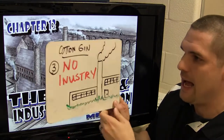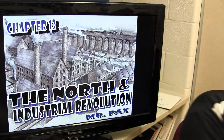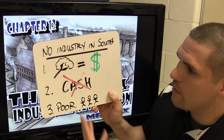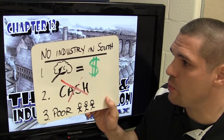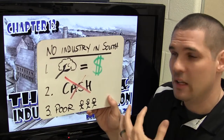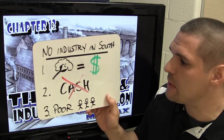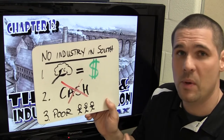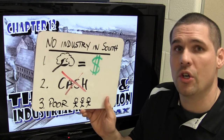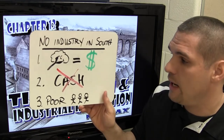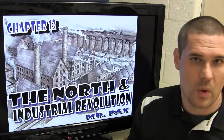One of the impacts of the cotton gin was that there was little to no industry in the South. First, cotton was already so profitable — why take the time, effort, and risk to create factories? If it's not broken, don't fix it. Second, there was little capital available because plantation owners' money was already tied up in land, crops, and slaves. Third, unless you were a plantation owner, you were either a slave or a small, poor white farmer with no means to buy manufactured goods.